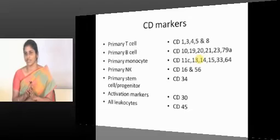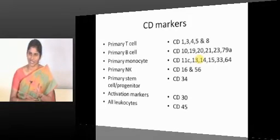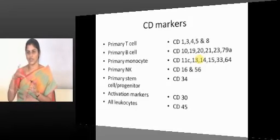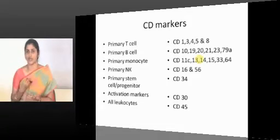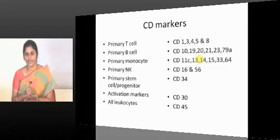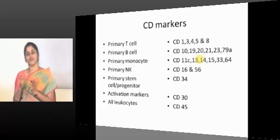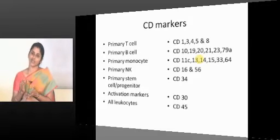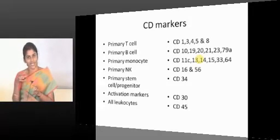CD16 is the Fc receptor for IgG. So the bottom line is natural killer cells express receptors for antibodies. This is the basis for ADCC — antibody-dependent cytotoxicity — which has become popular over the past 10 years. Antibodies will engage natural killer cells, resulting in their destruction.